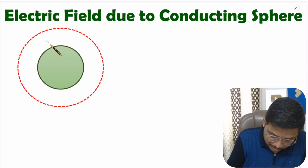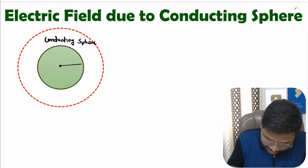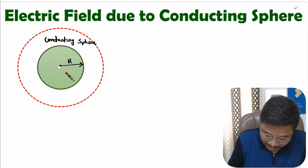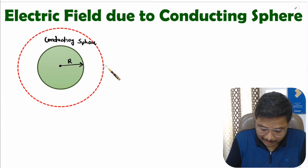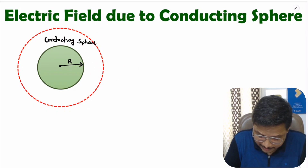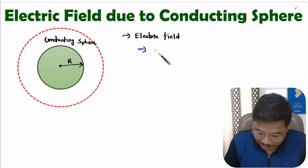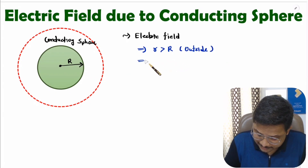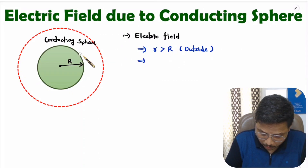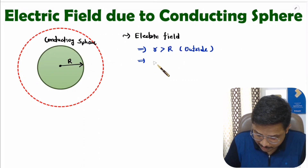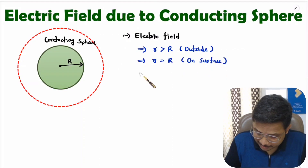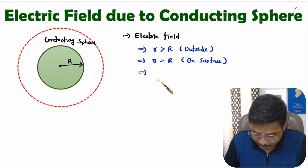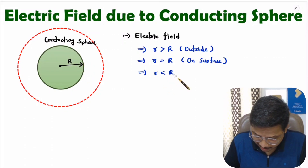Here we have a conducting sphere with radius capital R. In the first case, I will consider distance small r greater than capital R, meaning outside the sphere. In the second case, small r equals capital R, meaning on the surface. In the third case, small r is less than capital R, meaning inside the conducting sphere.